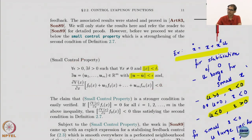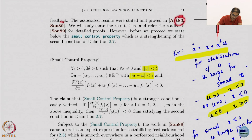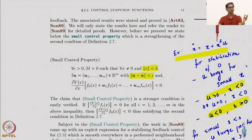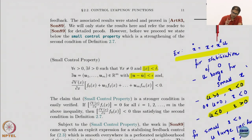For that, we need something more. We are already at control affine systems. We need what is called the small control property. Most of this work is due to Artstein and Sontag - the references are here, from 1983 and 1989, so not too recent. They came up with this notion of small control property, which is a strengthening of the control Lyapunov requirement for control affine systems.